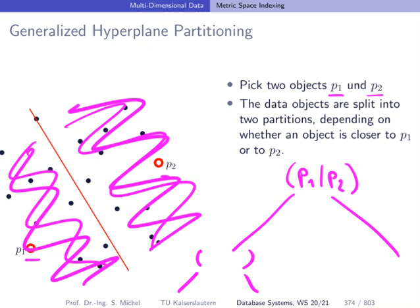We don't make any assumptions about how these objects look like. We just assume that we have a distance function — a metric — and this gives us, for two objects, the distance between them. Based on this, we can construct a tree.